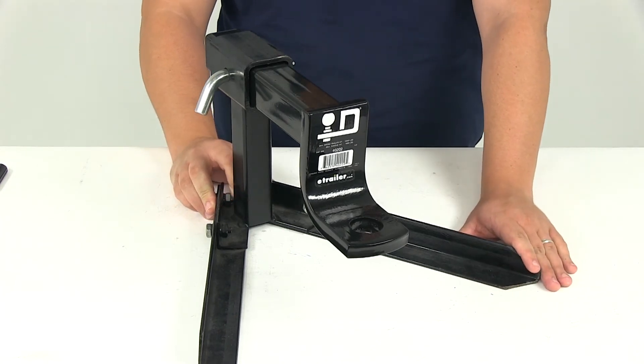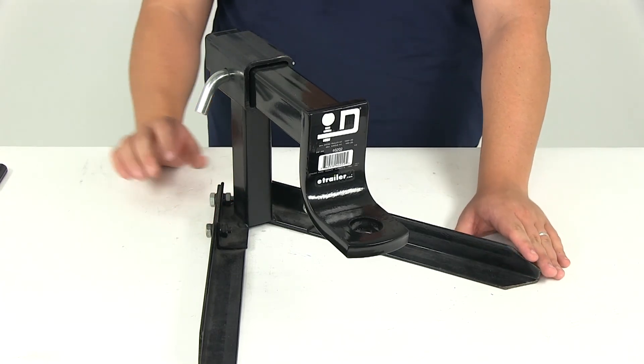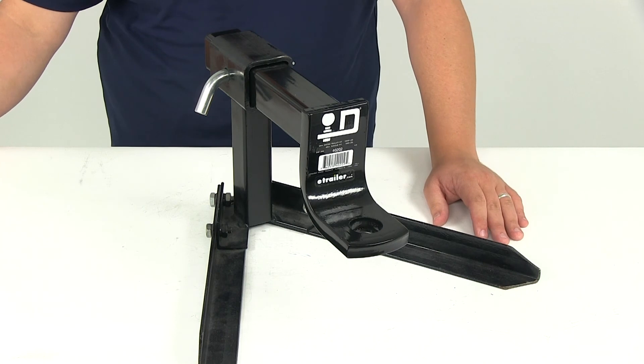That's going to do it for our review of part number 40202, the draw tight ball mount rated at 10,000 pounds.